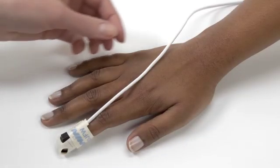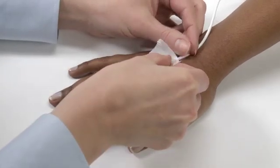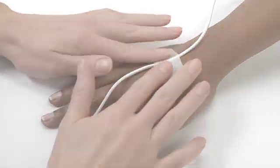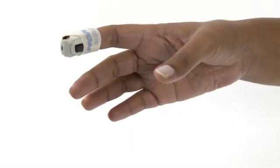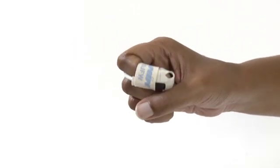It's a good idea to secure the cable with medical tape on the back of the hand with a little slack for movement. This helps prevent pulling at the sensor site. Don't wrap the sensor or finger tape too snugly. Tight wrapping can restrict blood flow and affect sensor accuracy.